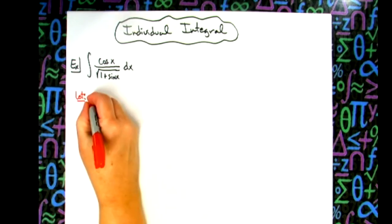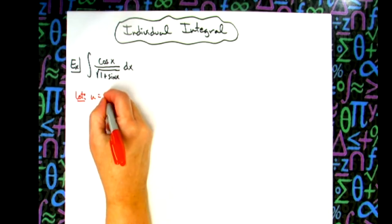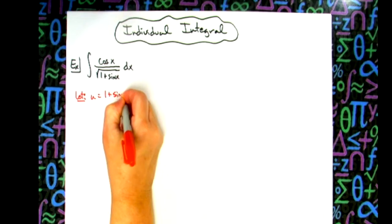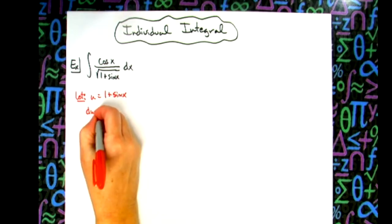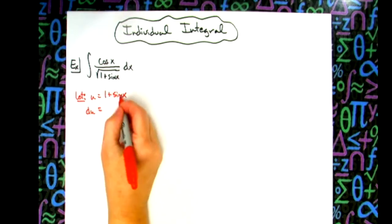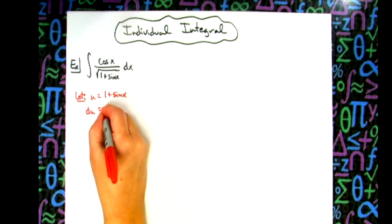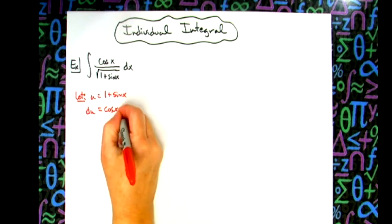So we're going to let our U be everything under the radical, so 1 plus sine x. I'll take the derivative of both sides. du is equal to—the one's going to go away—derivative of sine is going to be cosine x, and then dx.